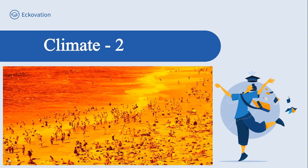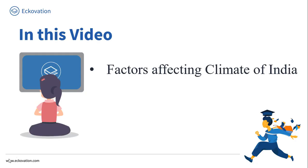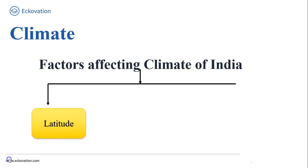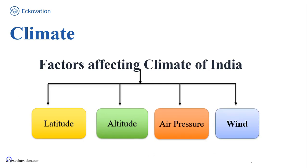Hello friends, today we are here with our fourth chapter on climate and we will discuss the second part of this chapter. In this video, we will look at factors affecting the climate of India. There are basically four factors which affect the climate of India: the very first is latitude, second is altitude, third is air pressure, and fourth is wind. Let's discuss each factor in detail.